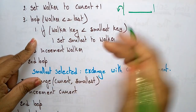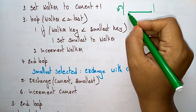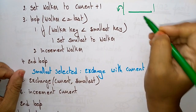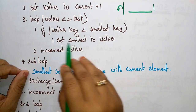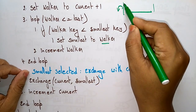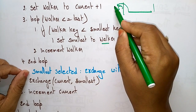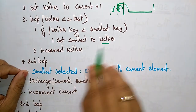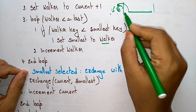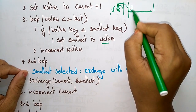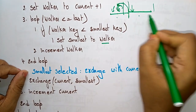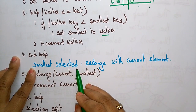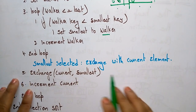Check if walker key is less than the smallest key. If the walker key is less than the smallest key, then set smallest to walker and shift to the sorted list. Increment the walker — the walker moves forward, this portion becomes sorted and this becomes unsorted.